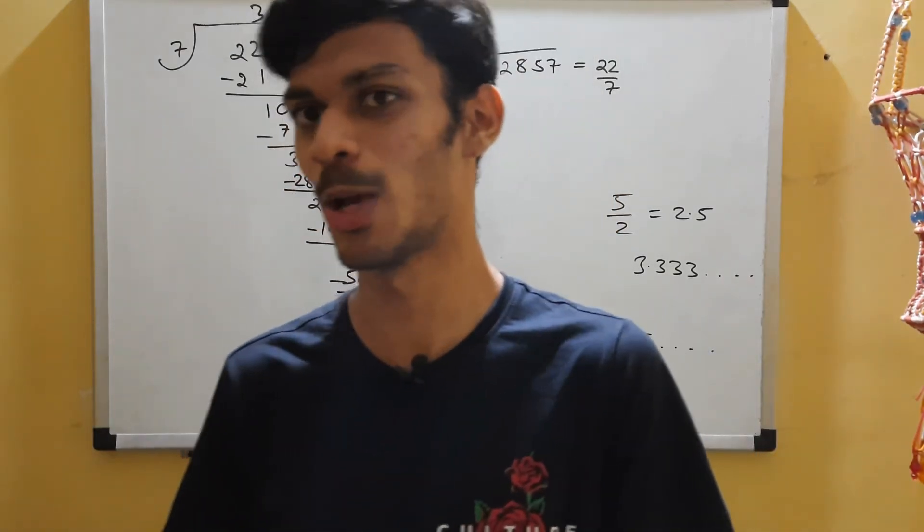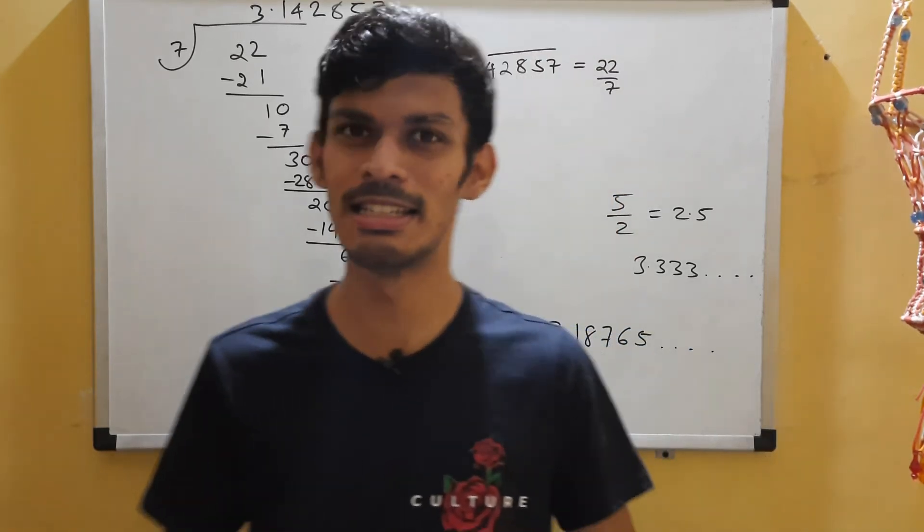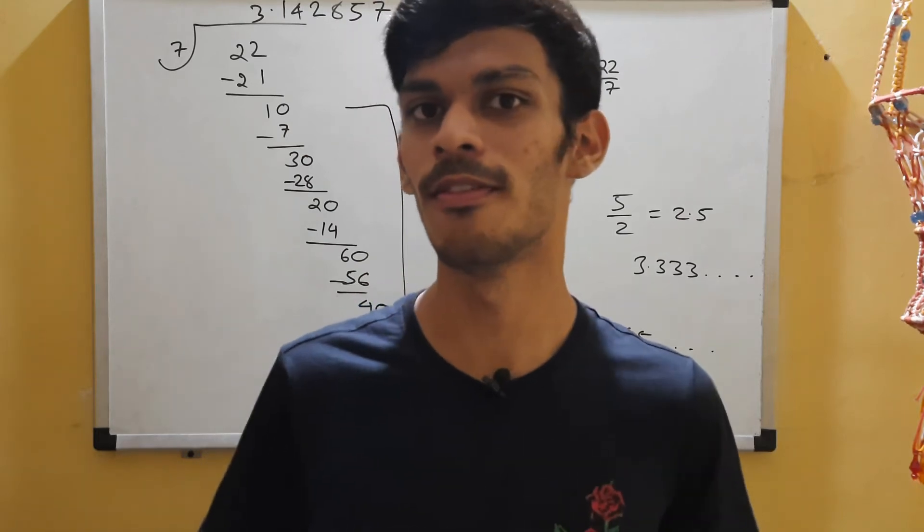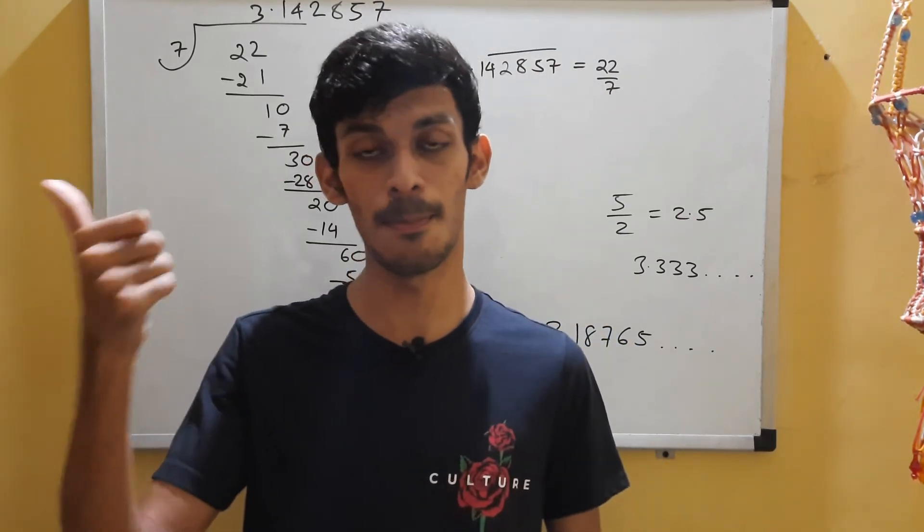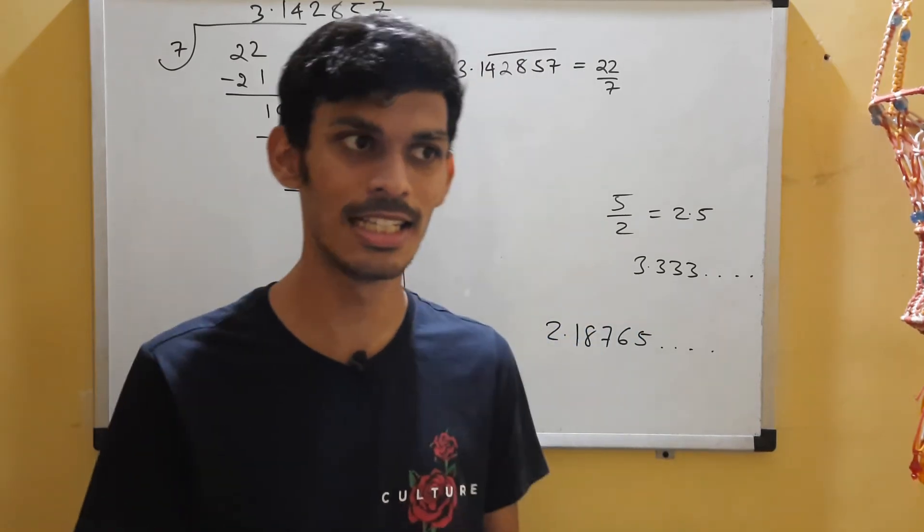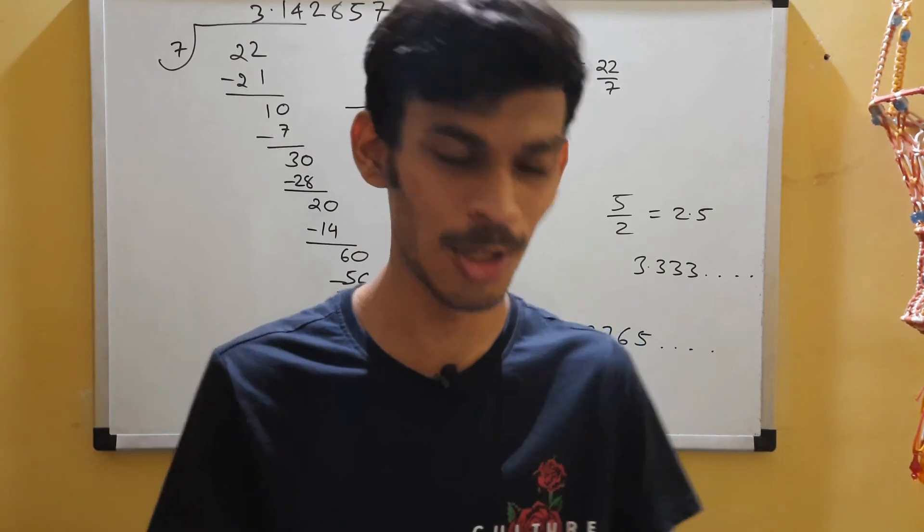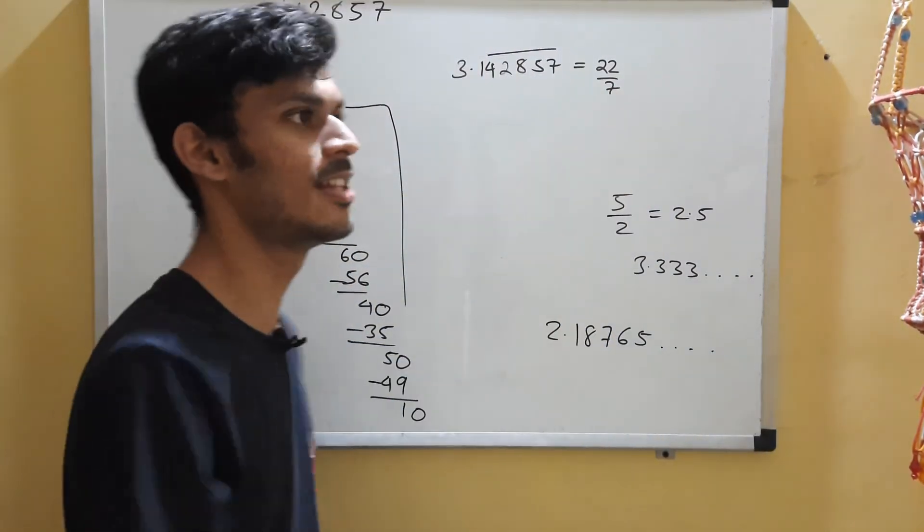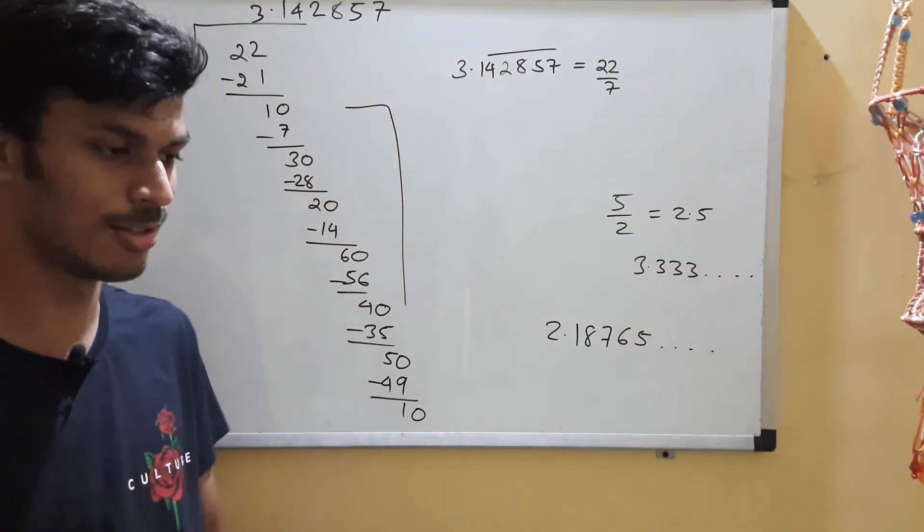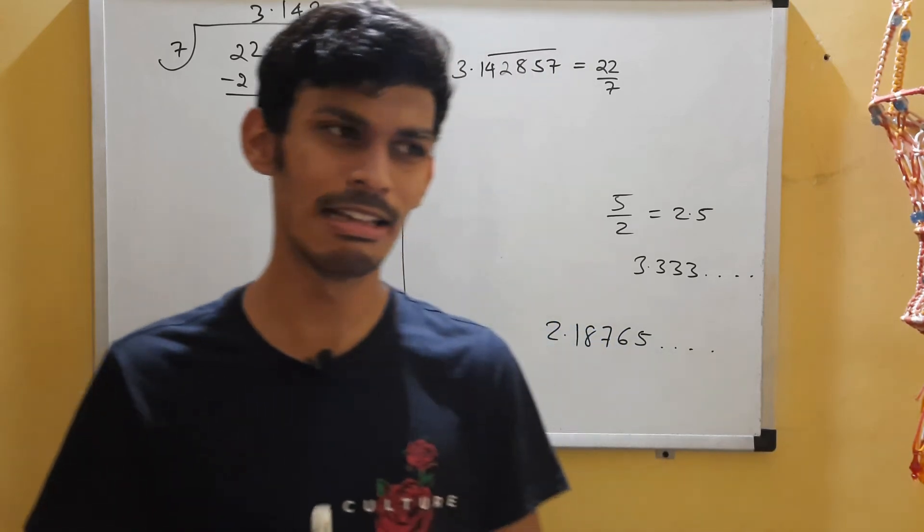After the research, I was able to make two important conclusions. One is that both me and my teacher were wrong. I was wrong when I claimed that pi is a rational number, and she was wrong when she said that pi equals 22 by 7. In conclusion, I will say that 22 by 7 is a rational number.